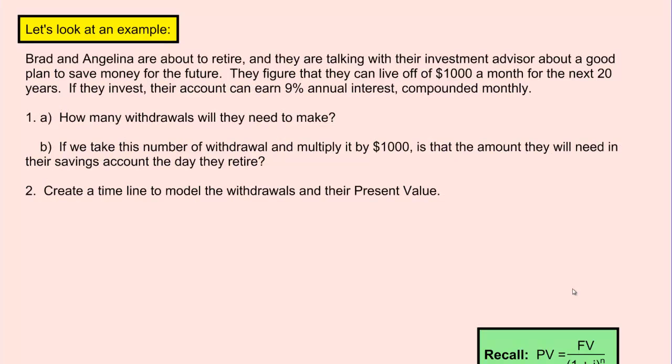Here we have Brad and Angelina who are about to retire, and they're talking with their investment advisor about a good plan to save money for the future. They figure that they can live off of $1000 a month for the next 20 years. If they invest, their account can earn 9% annual interest compounded monthly. Realistically that's a lot.